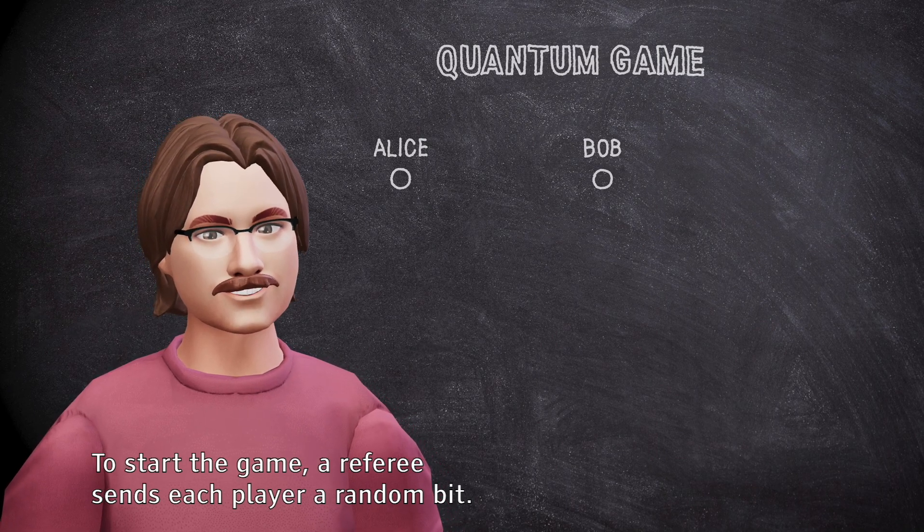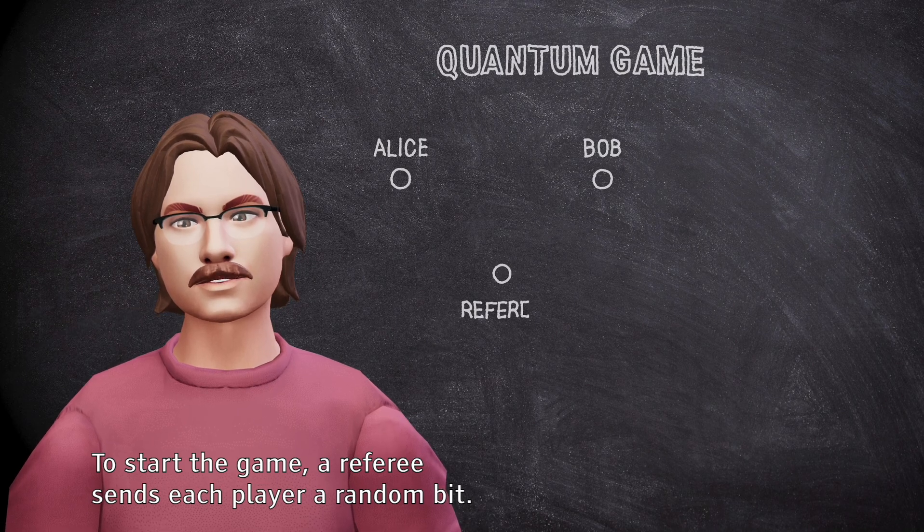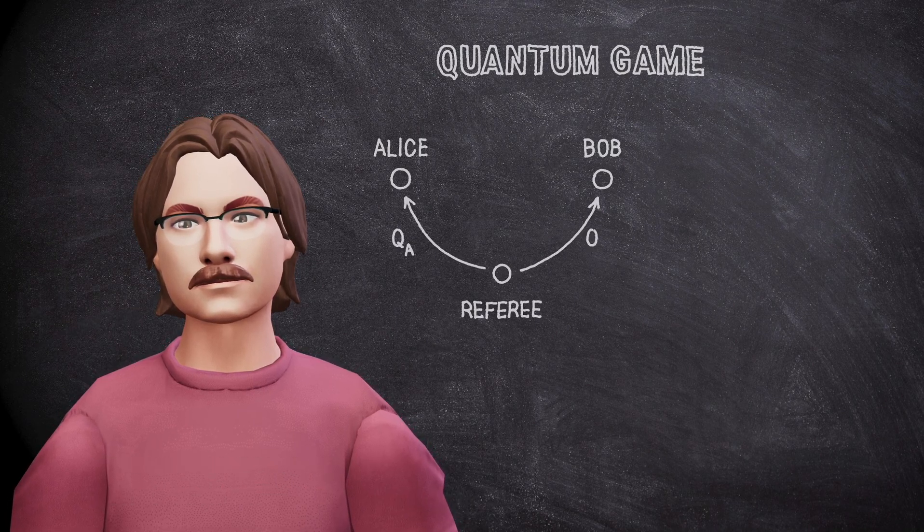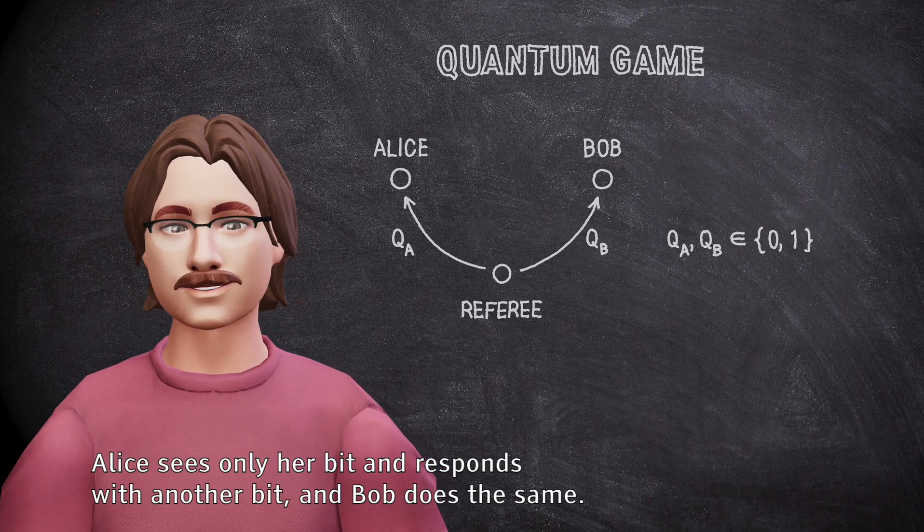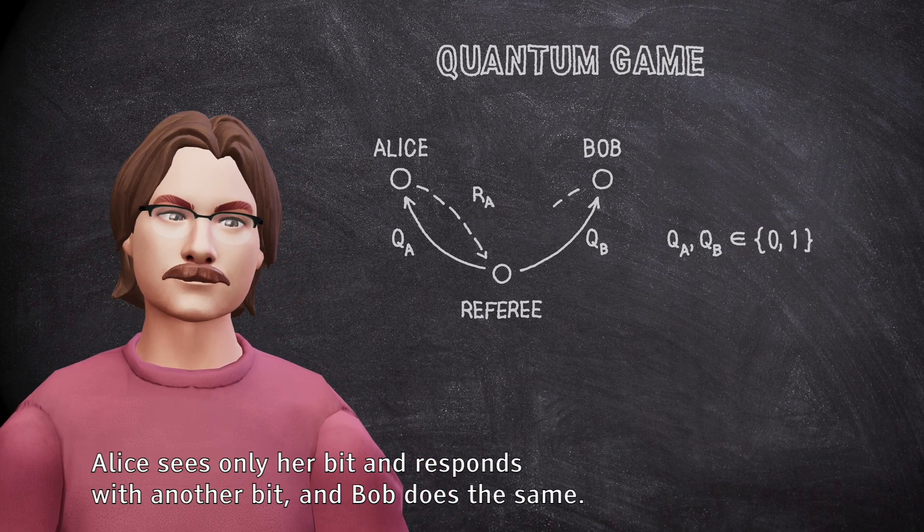To start the game, a referee sends each player a random bit. Alice sees only her bit and responds with another bit, and Bob does the same.